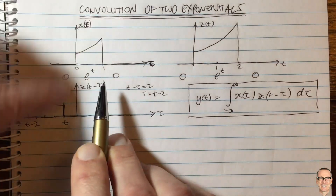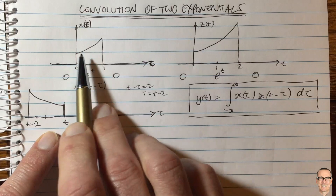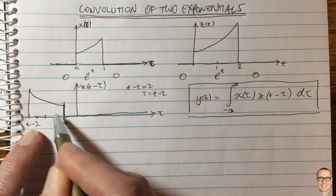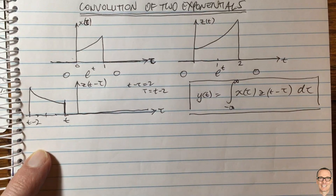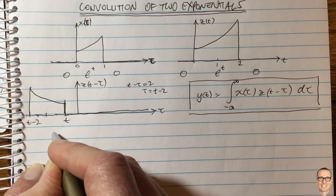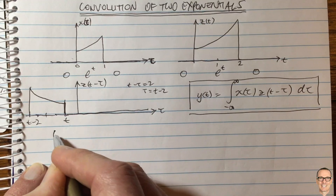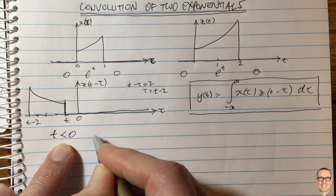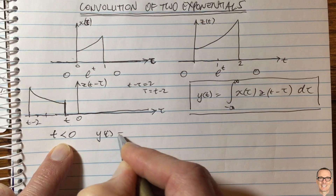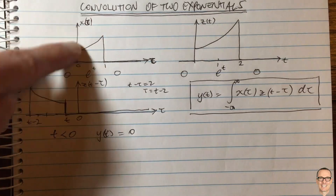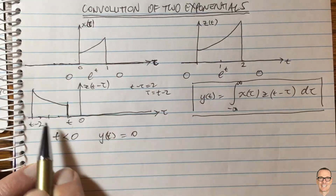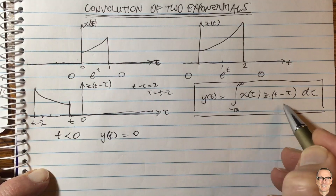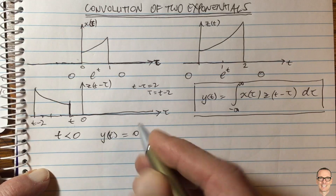If we multiply these two together for the value of t shown, there's going to be no overlap — the zero regions multiply the function — so the answer is zero. For all values of t less than zero, the answer will be zero: y(t) equals zero. There's no overlap; the zeros multiply through, giving zero.